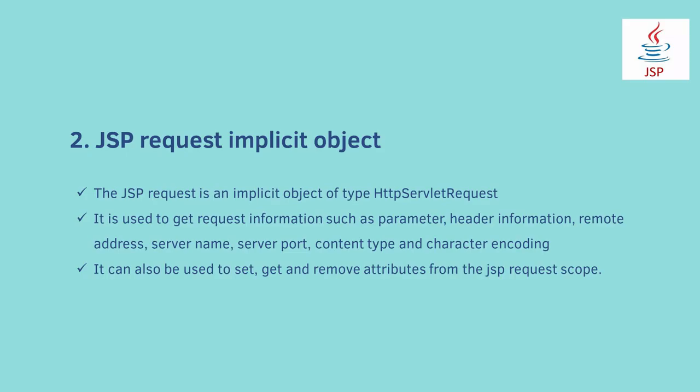The second is the GSP Request implicit object. The GSP Request is an implicit object of type HttpServletRequest, created for each GSP request by the web container. It can be used to get request information such as parameter, header information, remote address, server name, server port, content type, and character encoding etc. It can also be used to set, get, and remove attributes from the GSP request scope.